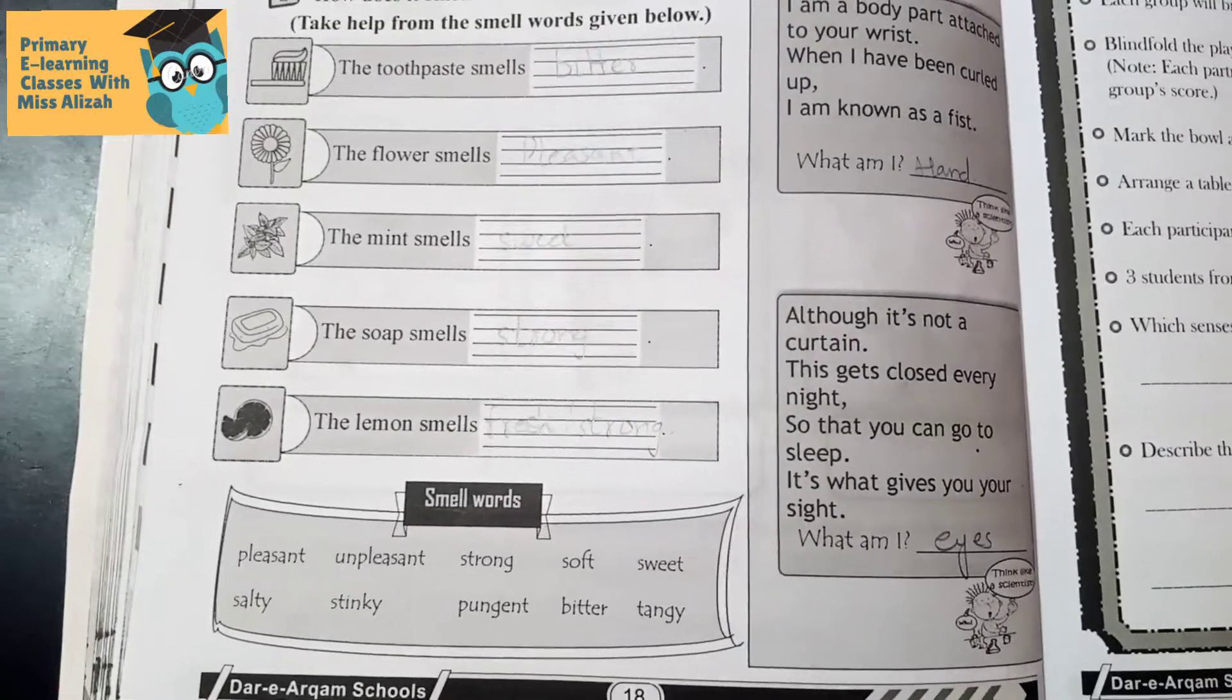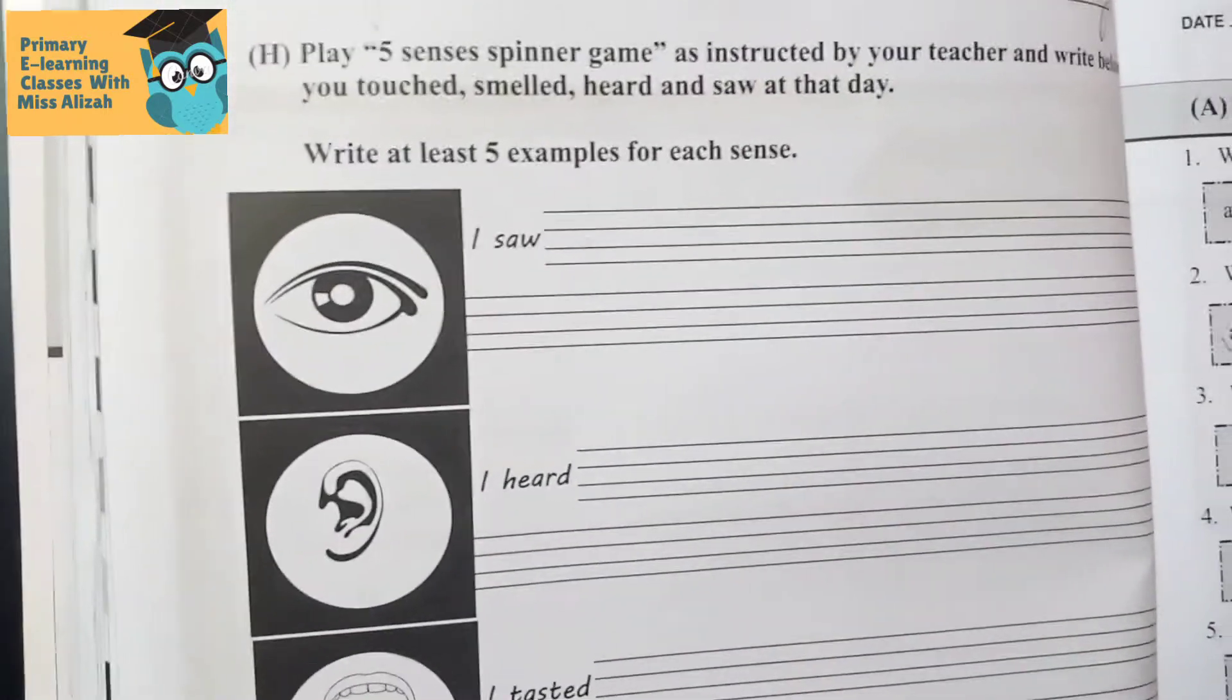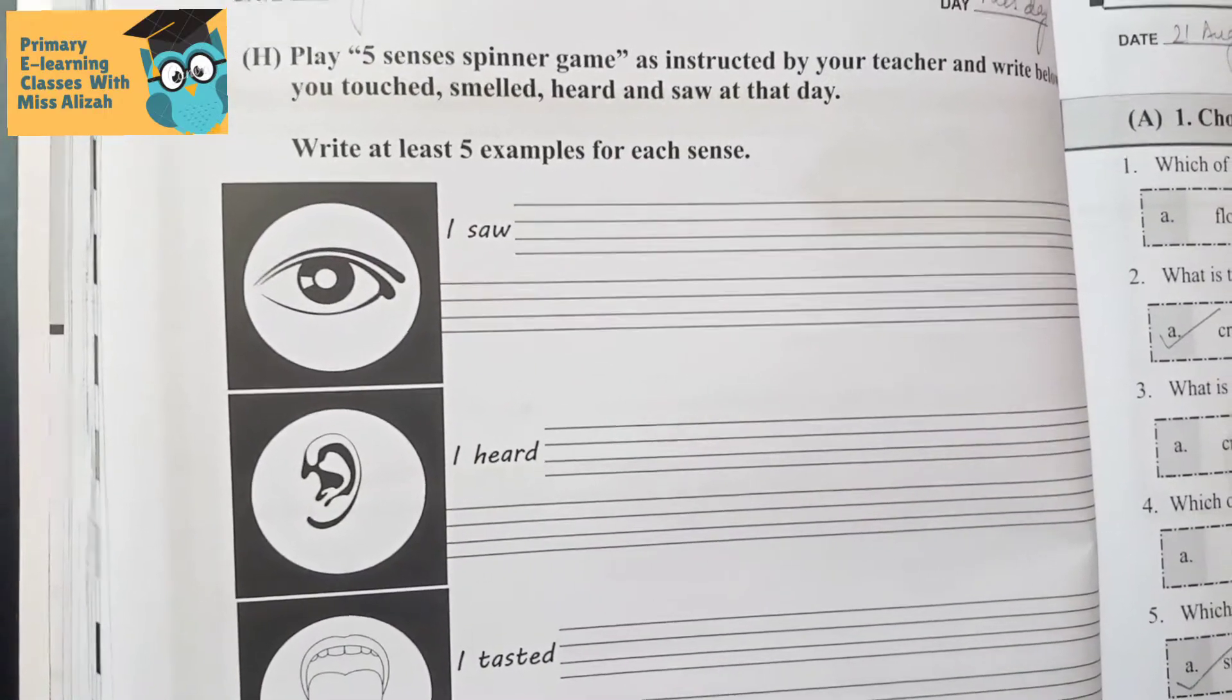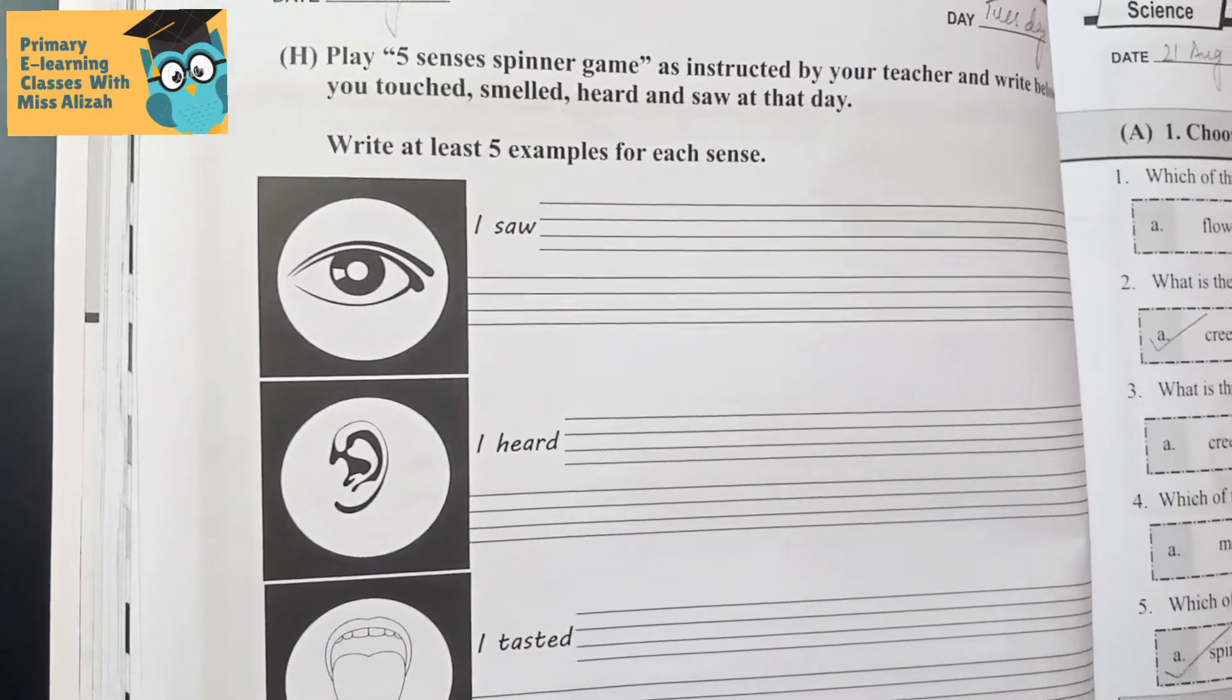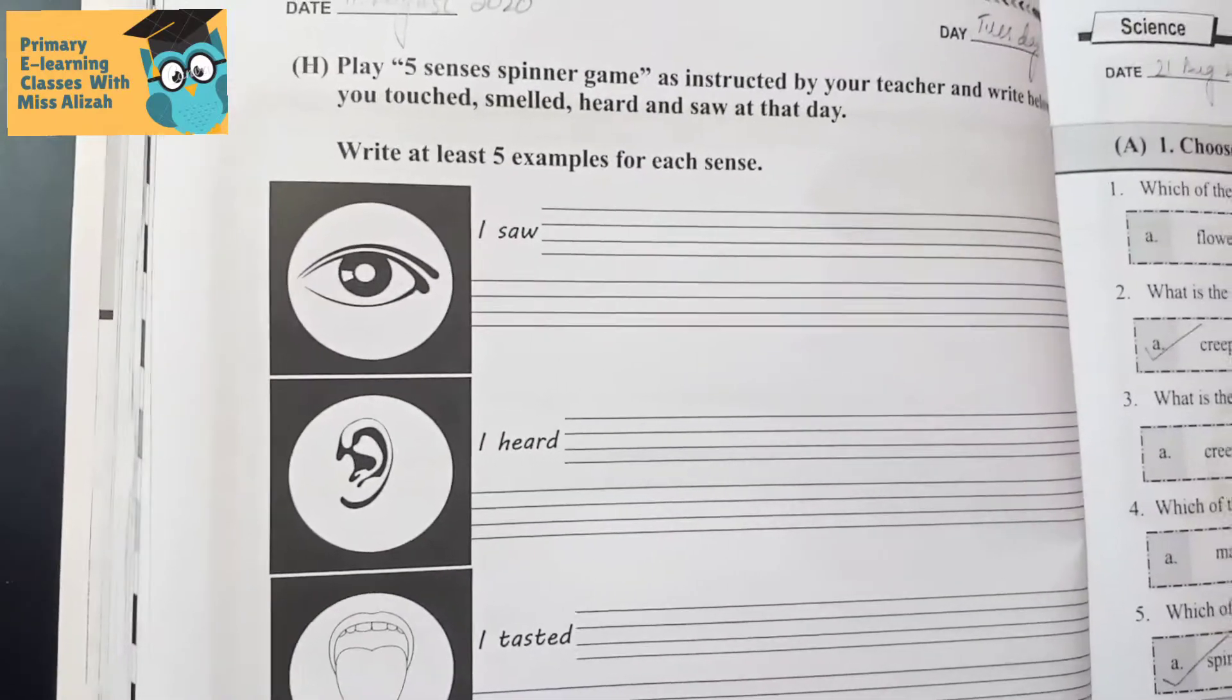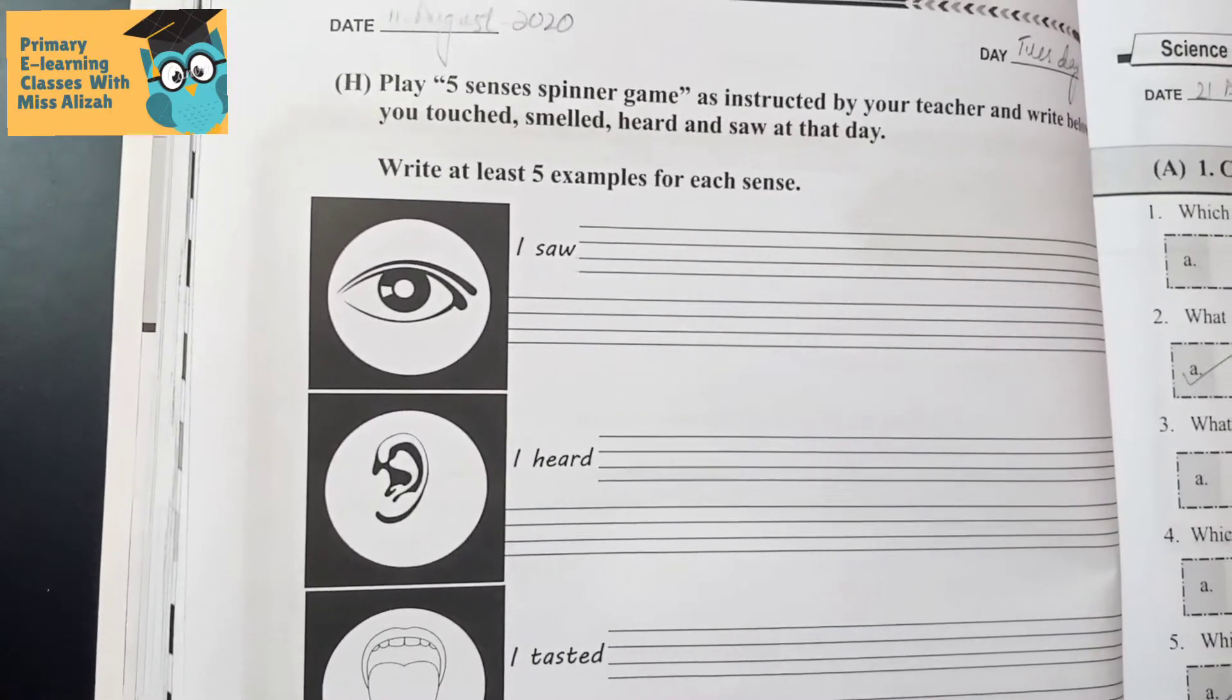Alright everyone, come to page number 20 and write down the date here as well. What does it say? Play five senses spinner game as instructed by the teacher. Unfortunately, now we cannot play this game, so we will just write at least five examples for each sense.